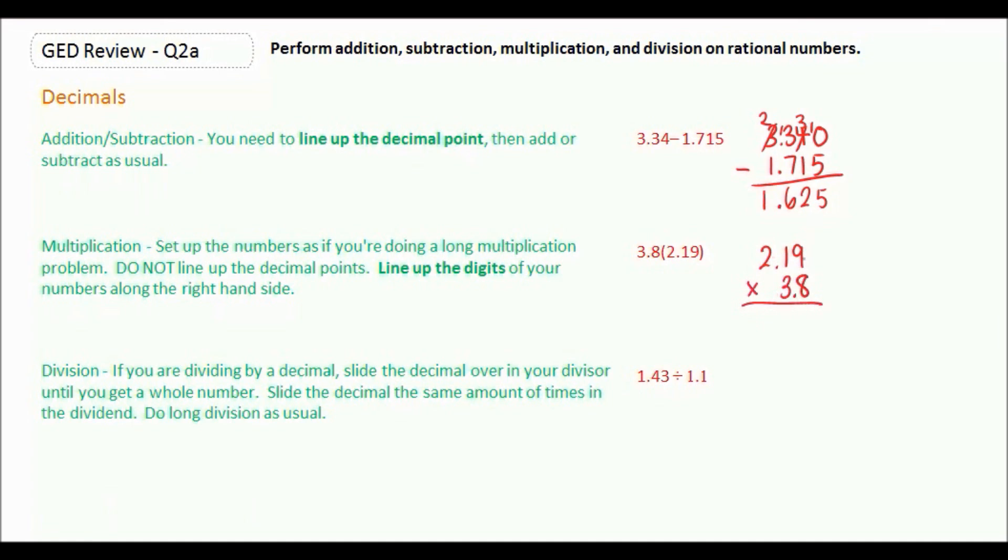Now we can multiply. 9 times 8 is 72. 8 times 1 is 8, plus 7 is 15. 8 times 2 is 16, plus 1 is 17. Leave a space. 3 times 9 is 27. 3 times 1 is 3, plus 2 is 5. And 3 times 2 is 6.